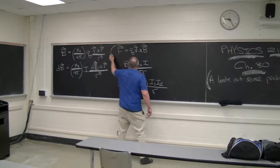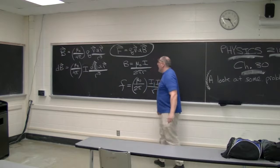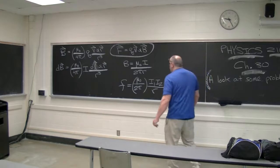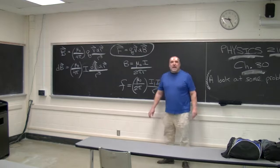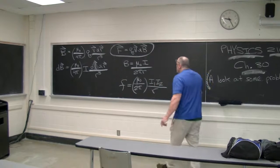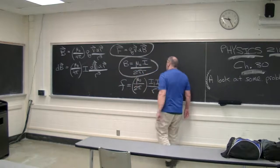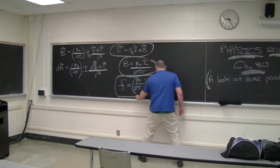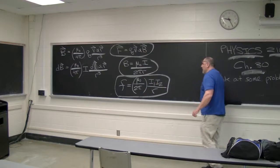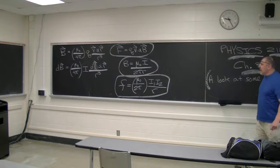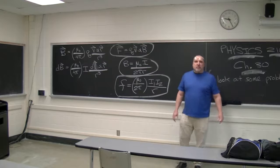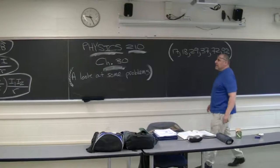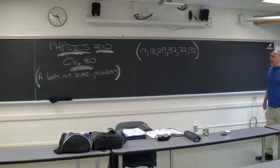There is another very useful formula — you can do many things with it: F vector equals q times v vector cross B vector. It tells you the magnitude and direction of a force on a charge under the influence of a magnetic field when it's moving through that field. This right here is the B field associated with a long straight wire, and this is the force per unit length associated with two current-carrying wires. And that's about it — let me start going with it.